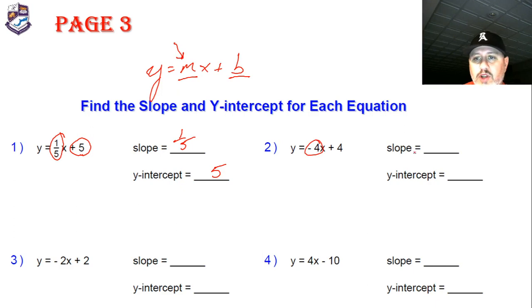So again, here we go. Slope negative four, y-intercept positive four. Slope for number three is negative two, my y-intercept is two. My slope for this guy is four, and my y-intercept is, don't forget the negative, negative ten.